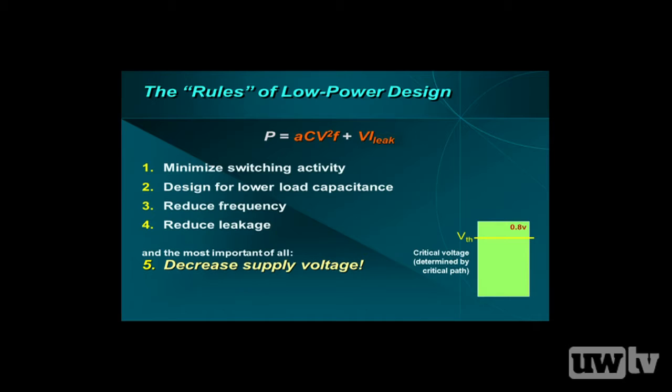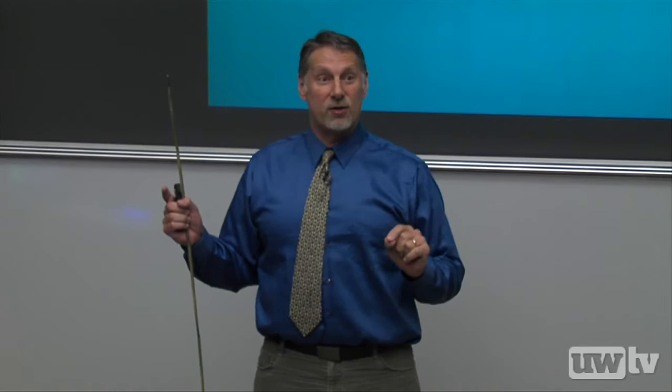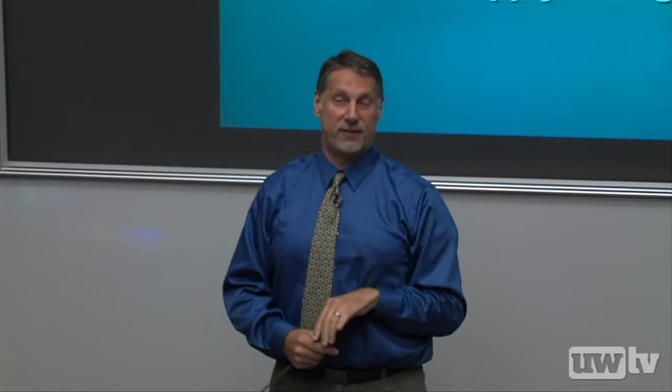We've got to go even higher — we've got to hit what's called the critical voltage. The critical voltage is identified by looking at all your circuits, finding the longest path of computation, then asking: in order to complete that in one nanosecond at a gigahertz, how much energy do I need? At some voltage it won't complete in one nanosecond, but if you give it more voltage it'll get faster and eventually complete.